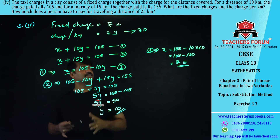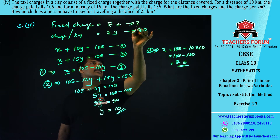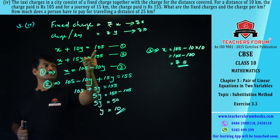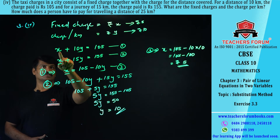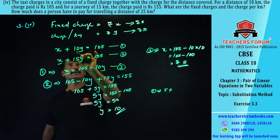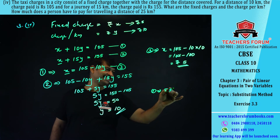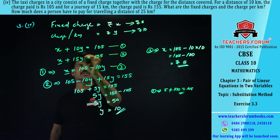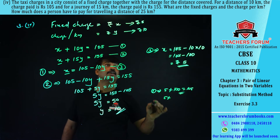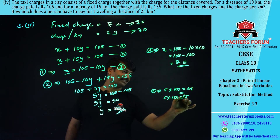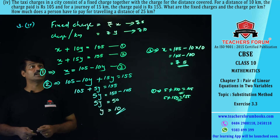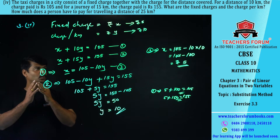Let us verify: fixed charge is 5. Equation one: 5 + 10 × 10 = 5 + 100 = 105. Correct. Equation two: 5 + 15 × 10 = 5 + 150 = 155. Correct. So the fixed charge is rupees 5 and the additional charge per kilometer is rupees 10. This type of problem is very important for your board exam.